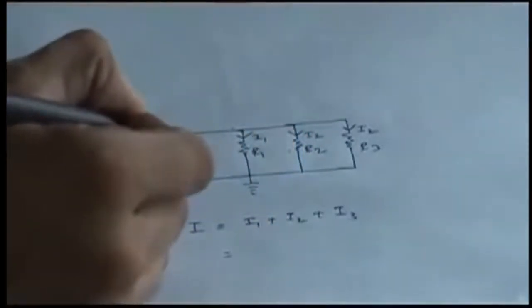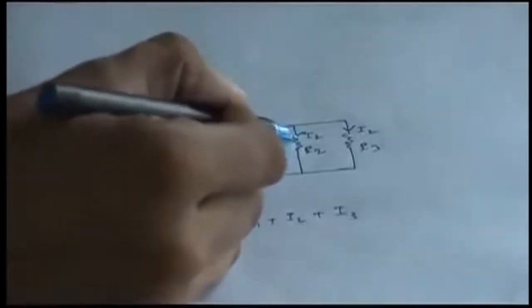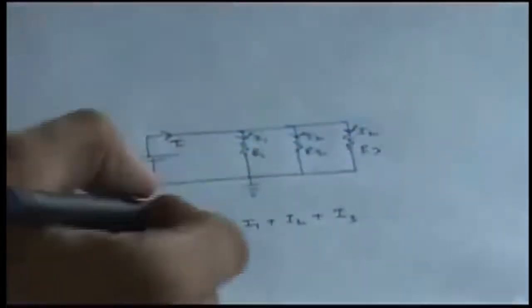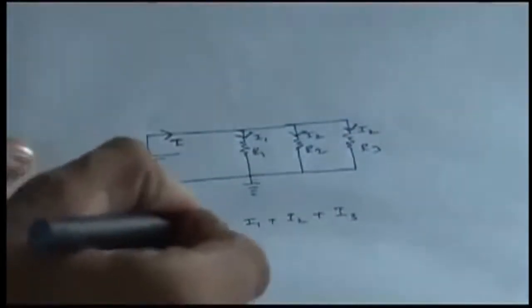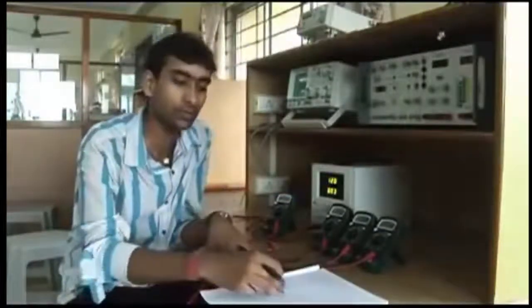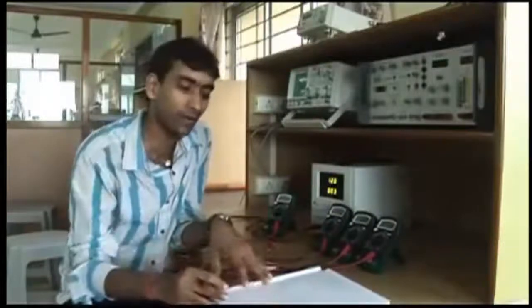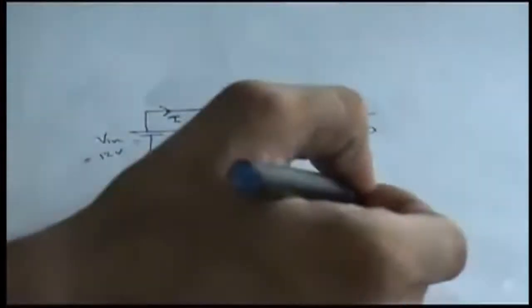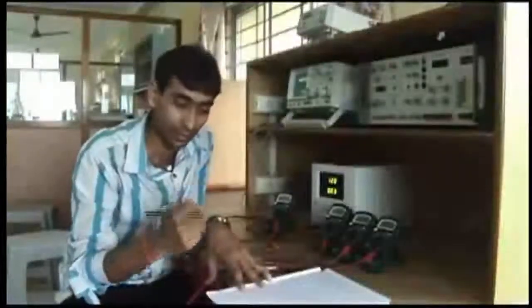So I am writing incoming current that is I is equal to I1 plus I2 plus I3, that is sum of all the outgoing currents. Means in a node sum of all the incoming currents is equal to sum of all the outgoing currents. So this is what KCL says. Now we have to verify that this current should be equal to sum of all. This we can verify practically using the circuit.